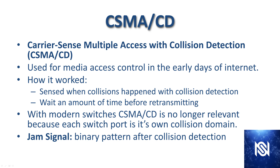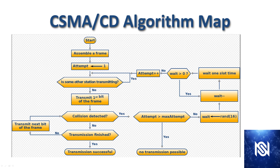Fortunately, this is no longer relevant. It really slowed down transmissions — we wouldn't be able to have the speeds we have today if this was still in place. Basically every switch port on modern switching is its own collision domain, so it's not relevant anymore. Here's a graphic of the CSMA/CD algorithm map from Wikipedia. If you're interested, you can go through this map and understand exactly how the CSMA/CD algorithm worked.